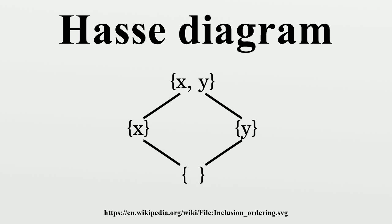In order theory, a Hasse diagram is a type of mathematical diagram used to represent a finite partially ordered set, in the form of a drawing of its transitive reduction.